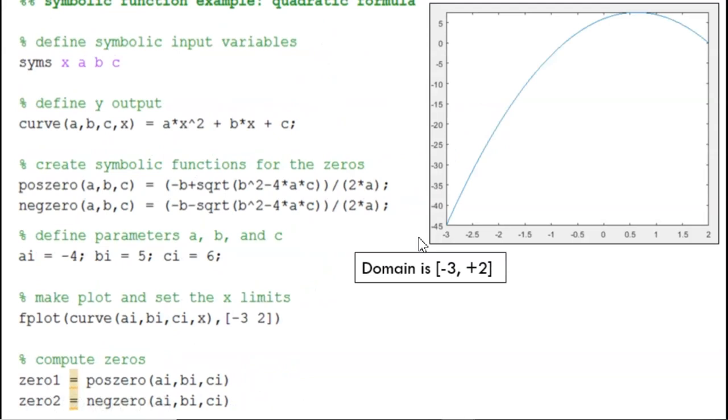This function has a limitless domain, meaning that x could range from negative to positive infinity. I set the limits of this plot by defining the minimum and maximum x values in a vector within the fplot call. In this example, x ranges from negative 3 to positive 2.